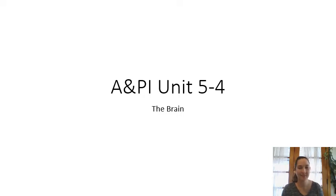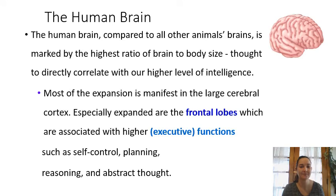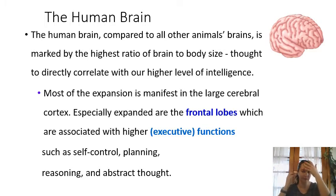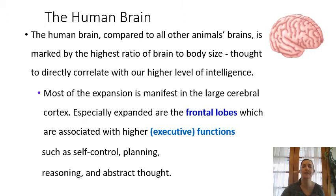Welcome back everybody. In today's video, we're going to be talking about the brain, continuing on with our exploration of the nervous system. The human brain is a pretty complex thing — it's much larger than most other animal brains as a ratio of brain size to body size. Most of the increase in size over time has been an increase of the cerebrum, especially the frontal lobes, which control self-control, reasoning, problem solving, and abstract thought — things many other animals are not capable of.